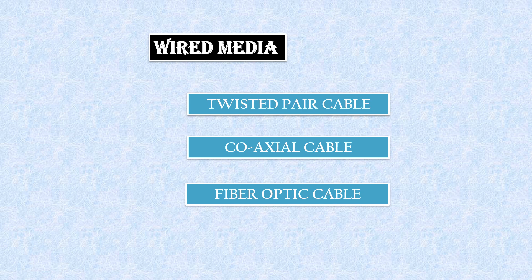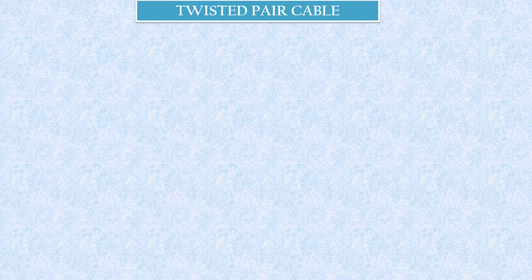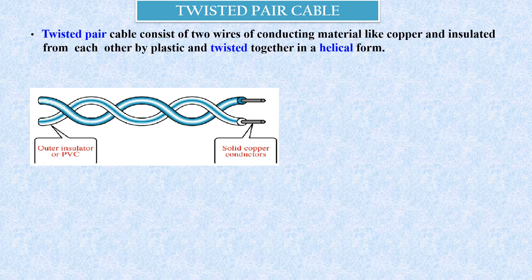Let us begin with Wired Media. We know very well that wired media have a cable where the data between the nodes is carried out using cables. We have a lot of wired technologies. The most popular wired media are twisted pair cable, coaxial cable, and fiber optics. The least expensive and most widely used guided transmission media is twisted pair cable. The twisted pair cable consists of two wires of conducting material like copper, insulated from each other by plastic.